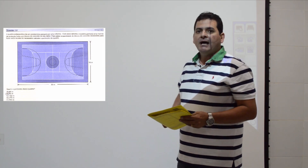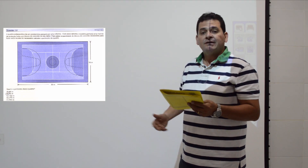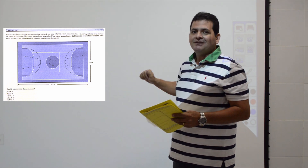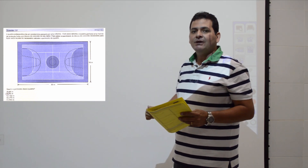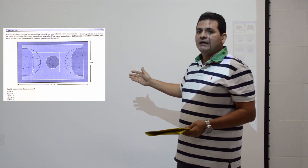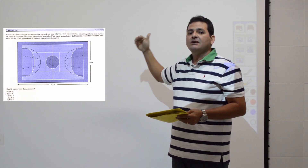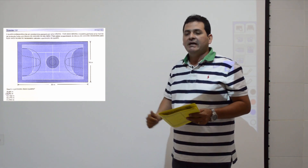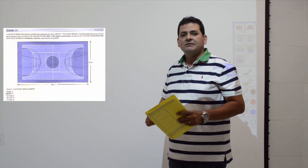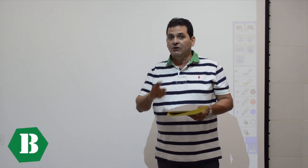Segunda questão, bem simples: fala-se do perímetro de uma quadra no formato retangular, com base de 30 metros e altura de 18 metros. Como se trata de um retângulo, os lados opostos são paralelos e congruentes — dois lados de 30 metros e dois lados de 18 metros. O perímetro é a soma das medidas de todos os lados, dando 96 metros. Item B.